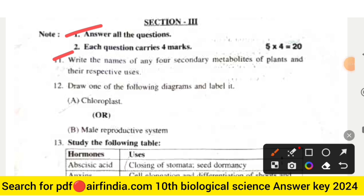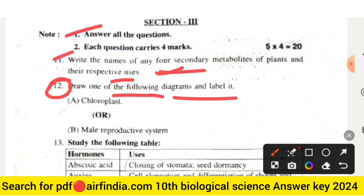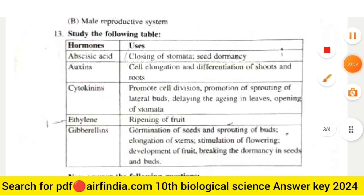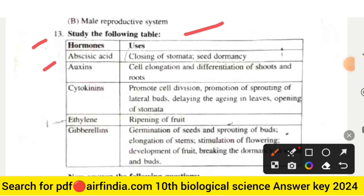Section 3 is 20 marks — answer all questions, four marks each. Question 11: Write the names of any four secondary metabolites of plants and their respective uses. Question 12: Draw one of the following diagrams and label it — (a) chloroplast, or (b) male reproductive system. Question 13: Study the table of plant hormones and their uses — ABA: closing of stomata and seed dormancy; auxins: cell elongation and differentiation of shoots and roots; cytokinin: promote cell division, sprouting of lateral buds, delaying aging in leaves, opening of stomata.